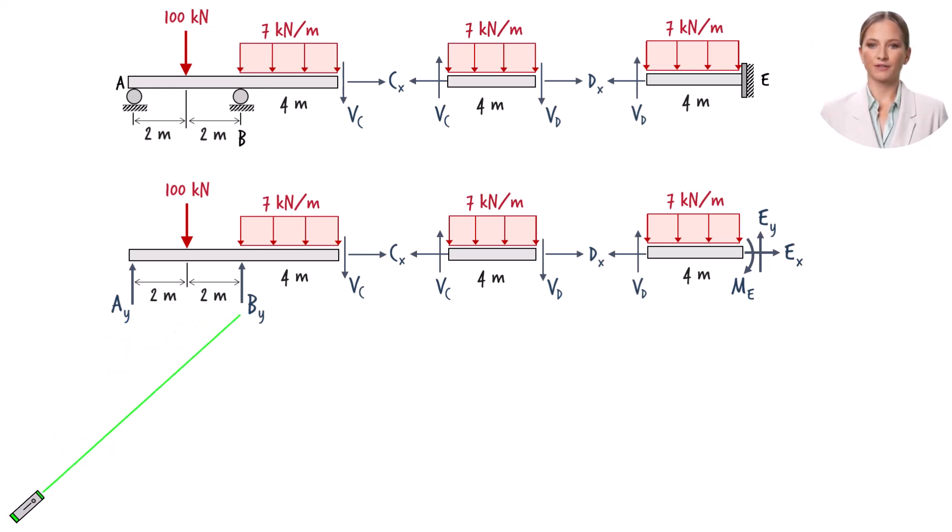The roller at B also has one reaction force. The fixed support has three reaction forces.